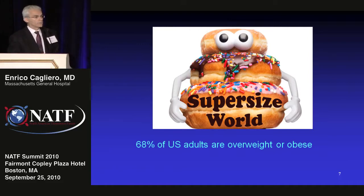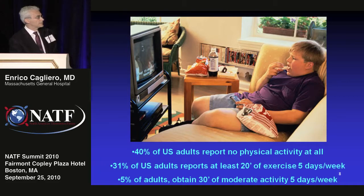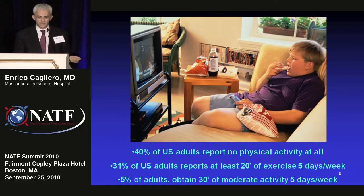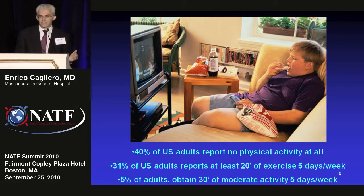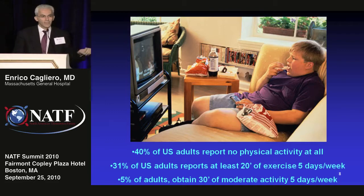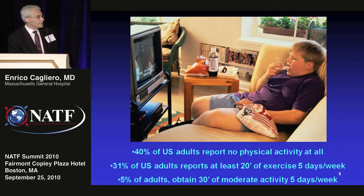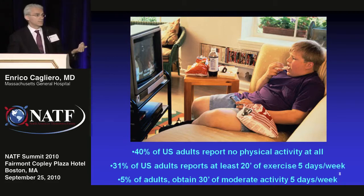The pandemic of diabetes comes down to food availability, television, and physical inactivity. In surveys, 40% of adults say they do no physical activity at all, while 31% say they do at least 20 minutes of exercise five days a week — but most of them are lying. When given pedometers and accelerometers to objectively measure activity, only 5% of U.S. adults do 30 minutes of moderate activity five days a week — the threshold shown in the Diabetes Prevention Program to reduce diabetes prevalence by 60%, far more effectively than any medication.